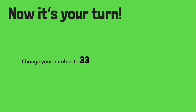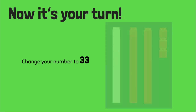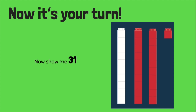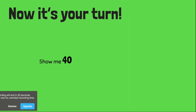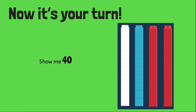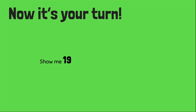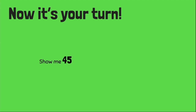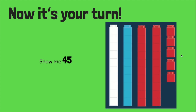Show me thirty-three. Nice — you just took away two. Fantastic. Show me thirty-one. Three groups of ten and one. Show me forty. Four groups of ten. Super job. Show me nineteen. One group of ten, and then you just snap one off for a group of nine. Show me forty-five. Four groups of ten and five more. You're going to be a master.